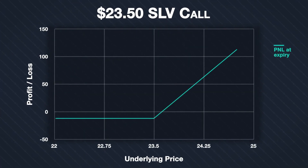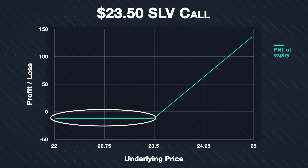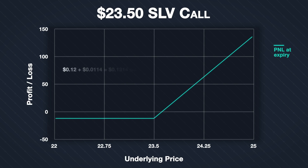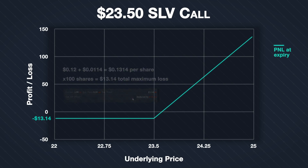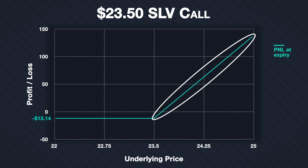This is the P&L chart at expiry for this option position. For any price of SLV below the strike price of $23.50, we will make the maximum possible loss, which is limited to the premium paid plus the fees. We paid a premium of 12 cents per share and fees of $0.0114 per share, giving a total cost per share of $0.1314. With one contract at a multiplier of 100, the total maximum loss is $13.14 — which matches what was shown as the total cost when we placed the order.